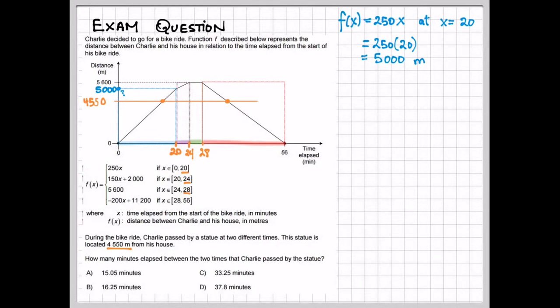We will need to use the first part of the function, which is 250x, and the last piece of the function, which is minus 200x plus 11,200. Those are the two pieces of our piecewise function that we need to use.